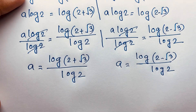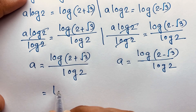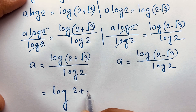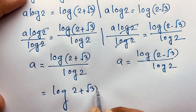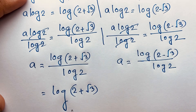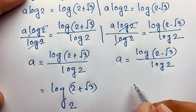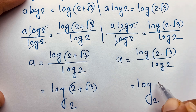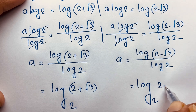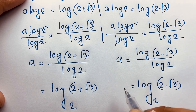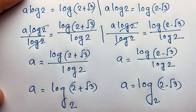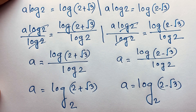This can be written as log base 2 of (2 plus square root 3), and log base 2 of (2 minus square root 3). This is the value of a in this exponential math problem.